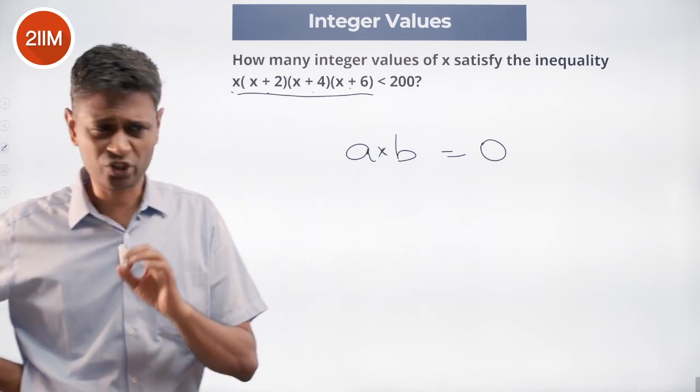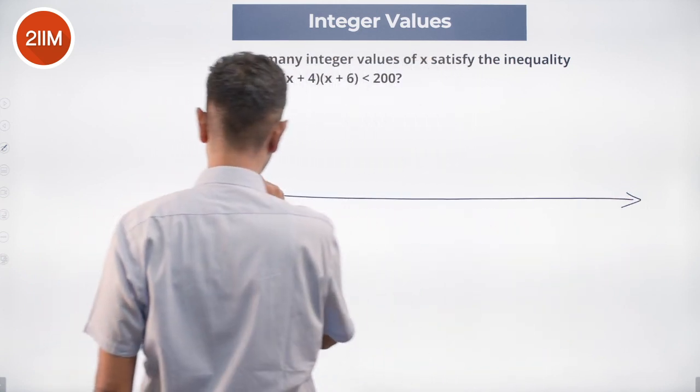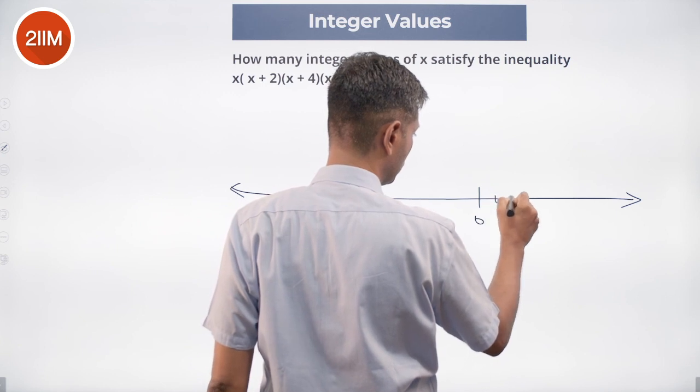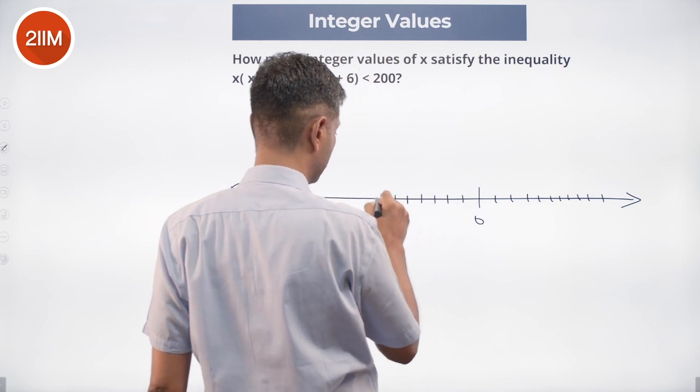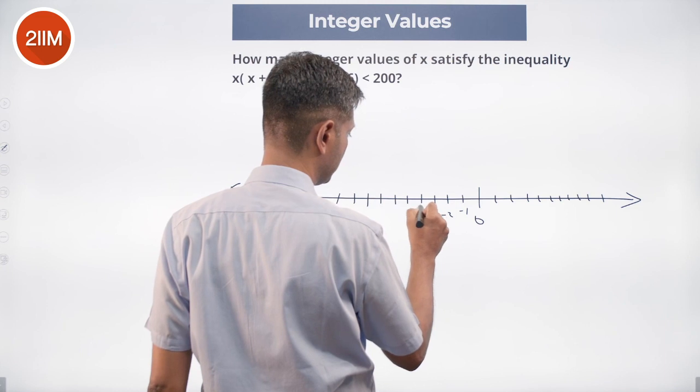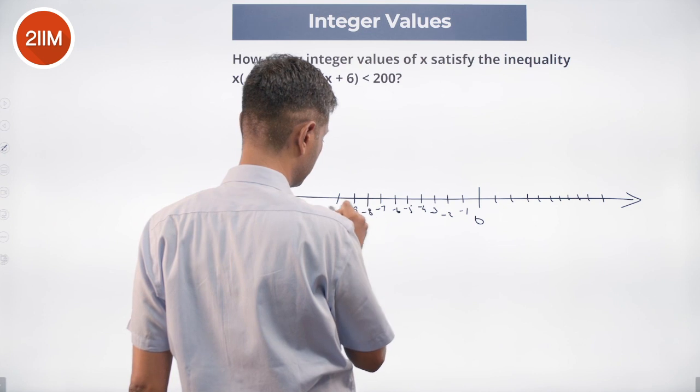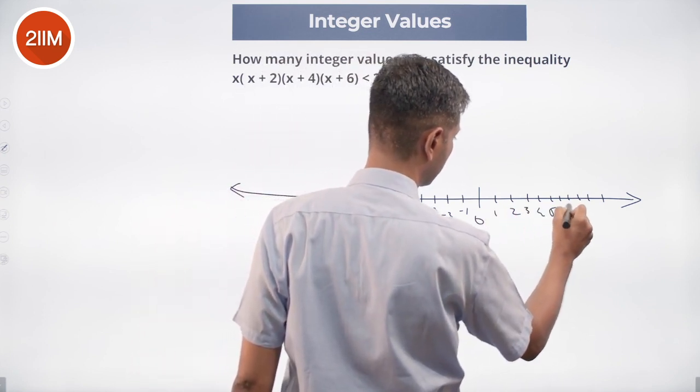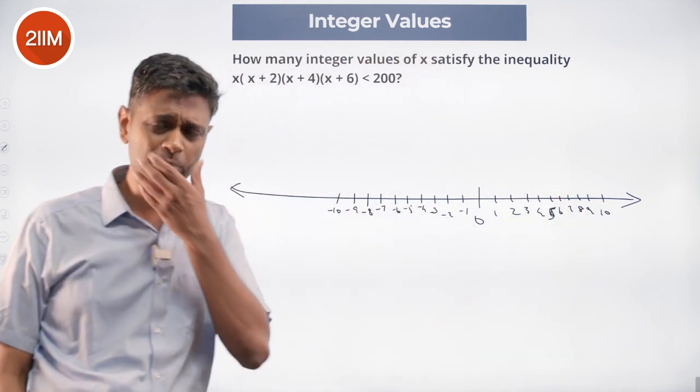And so now I say, very interesting, I am going to draw the number line. And then put 0, 1, 2, 3, 4, 5, 6, 7, 8, 9, 10, minus 1, minus 2, minus 3, minus 4, minus 5, minus 6, minus 7, minus 8, minus 9, minus 10, and so on. Nice, brilliant.